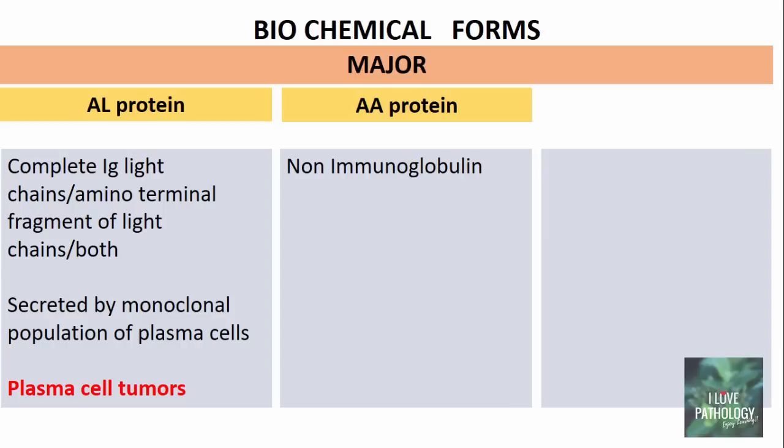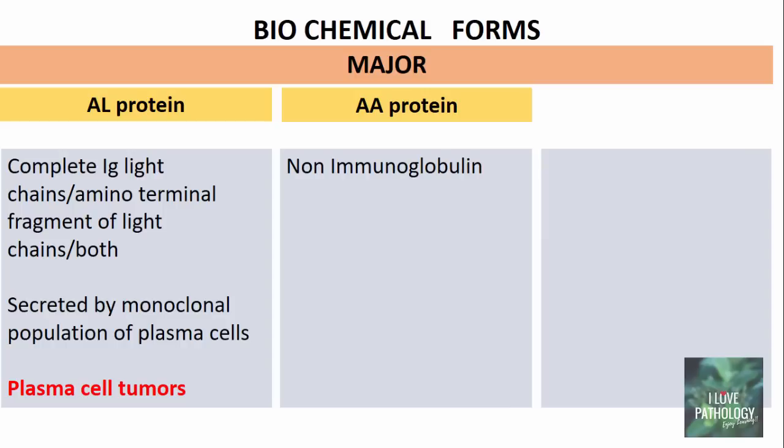The second major type is AA protein, or amyloid-associated protein. Unlike the AL protein, this is a non-immunoglobulin. It is derived from SAA — serum amyloid-associated protein — which is synthesized by the liver. SAA is an acute phase protein, meaning its plasma concentration increases in response to inflammation. This particular type of protein is therefore found in cases of chronic inflammatory disorders.